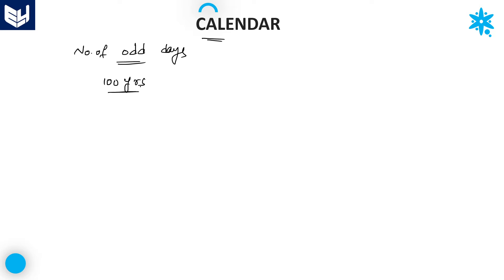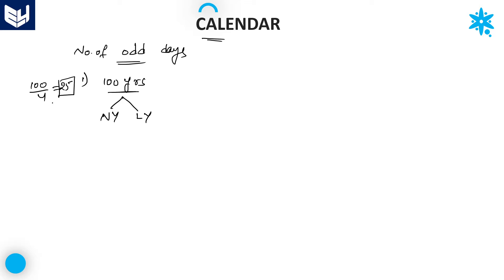First, let us take 100 years. Find the number of odd days in 100 years. In 100 years, we have 2 types of years: normal years and leap years. You can separate leap years first. In 100 years, how many leap years will there be? 100 divided by 4 gives 25. So many students make a mistake at this point — they think the number of leap years is 25, but 25 is not the correct number of leap years in 100 years.